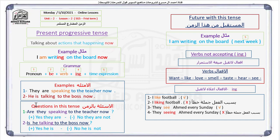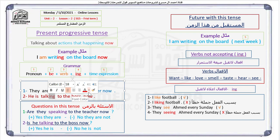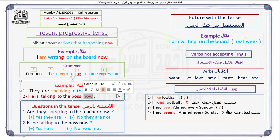Let's look at the next example: 'He is talking to the boss now.' He — one, is — two, talking — three and four, and now — number five, which is the time expression marked in red. So the time expression is element number five.